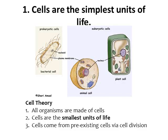The first characteristic of life states that cells are the simplest unit of life. This goes with one important theory in biology called the cell theory. This theory states that all organisms are made up of cells, cells are the smallest most basic unit of life, and that cells can only come from pre-existing cells by some type of cell division. We'll get into the types of cell division later — they include mitosis and meiosis.